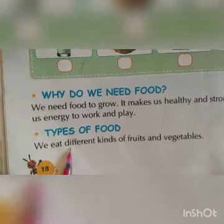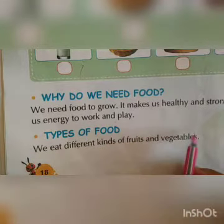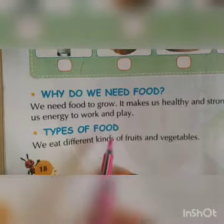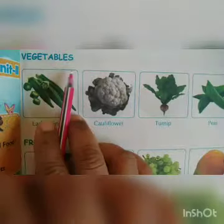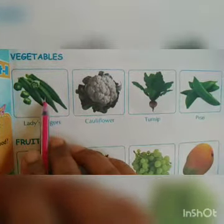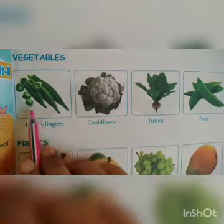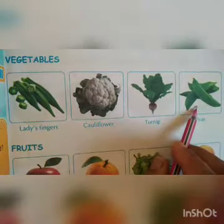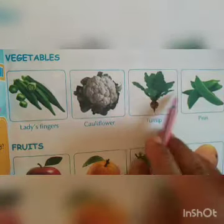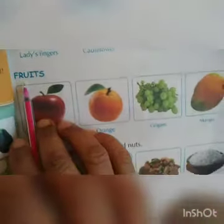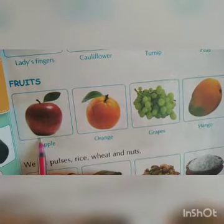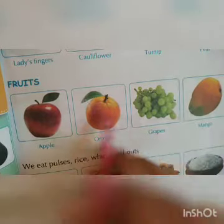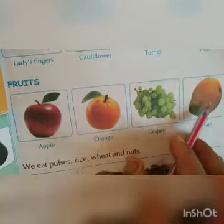Types of food — we eat different kinds of fruits and vegetables. You can see a picture of vegetables here: lady finger, cauliflower, turnip, and peas. And here are fruits which we eat: apple, orange, grapes, and mango.